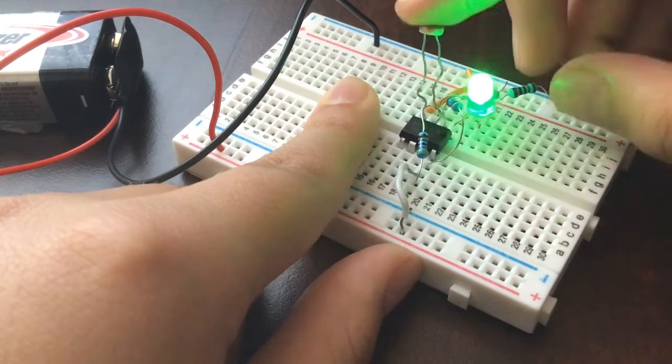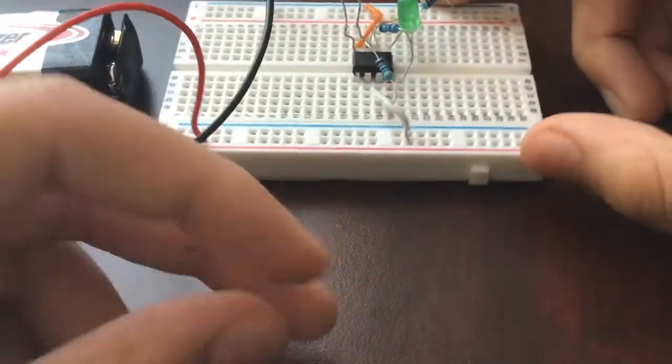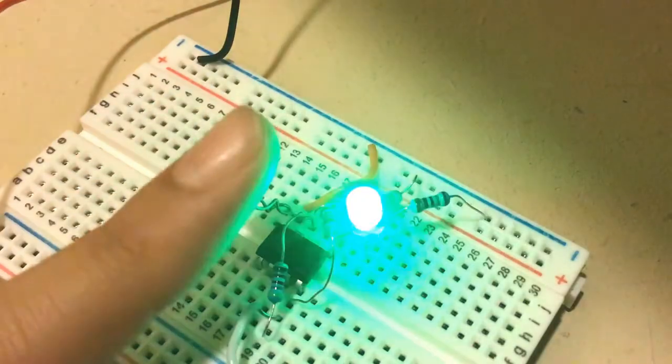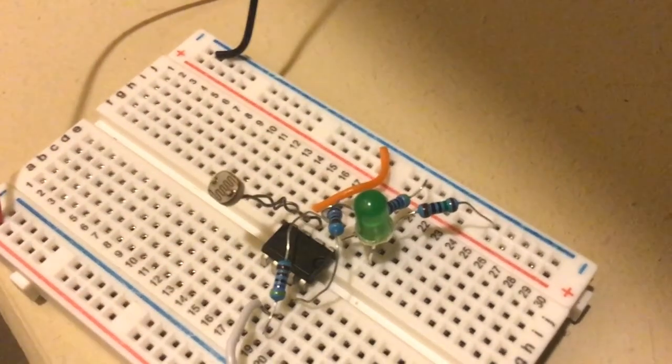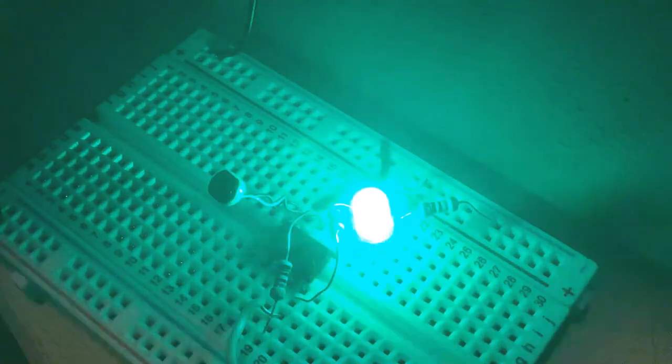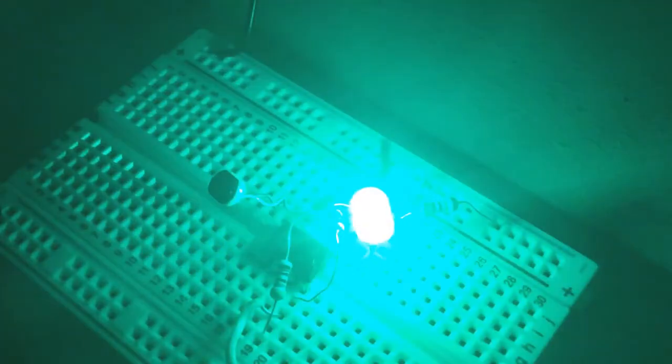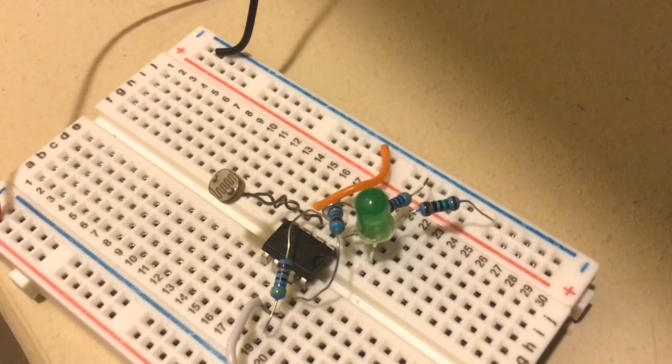Now switch to nighttime so we can see the scene better. As you can see right there, when I go like that, the light blocks and it turns on. Now let's turn off the room light so it acts as a night light in this situation.